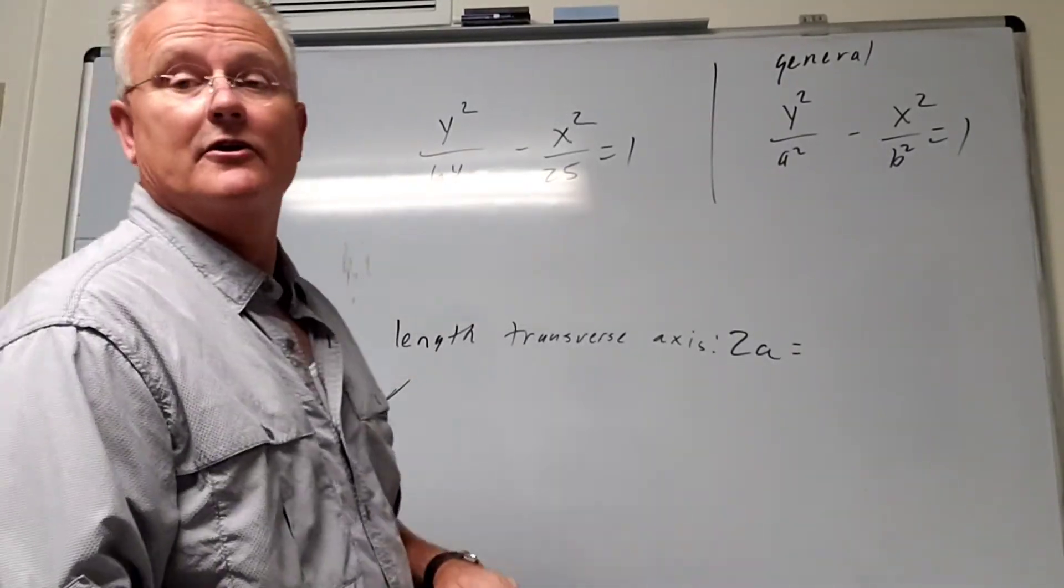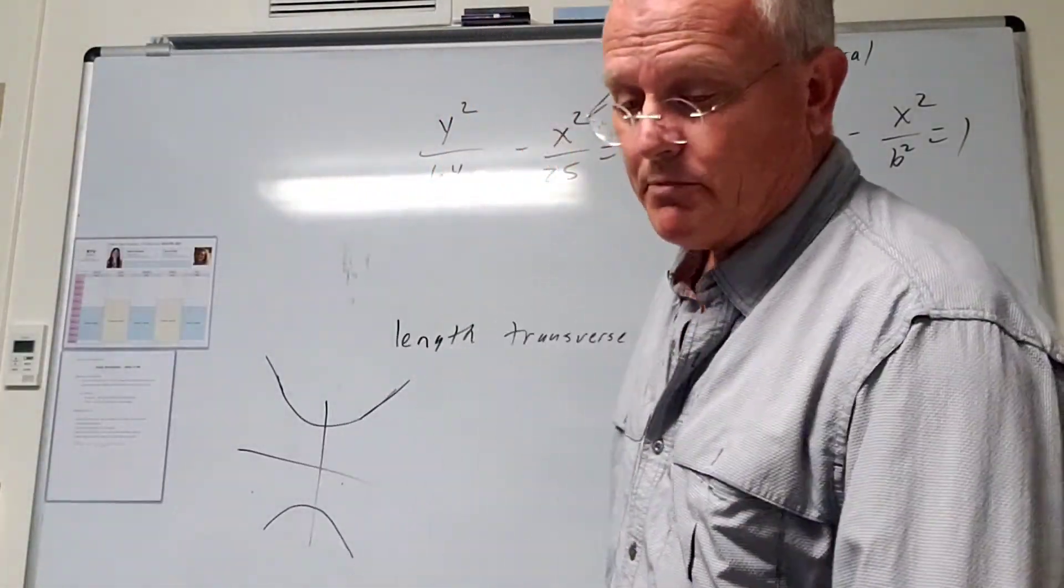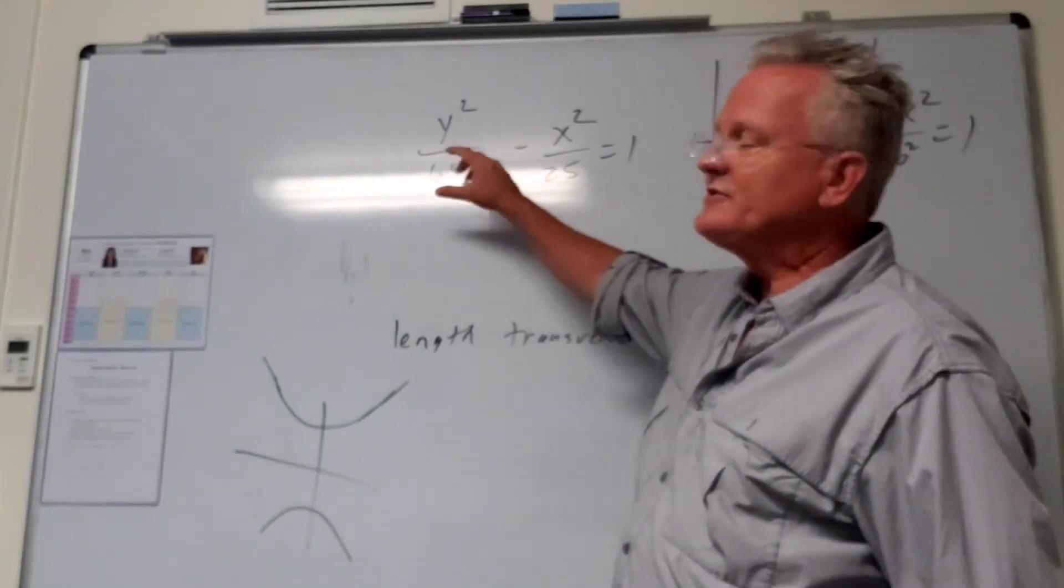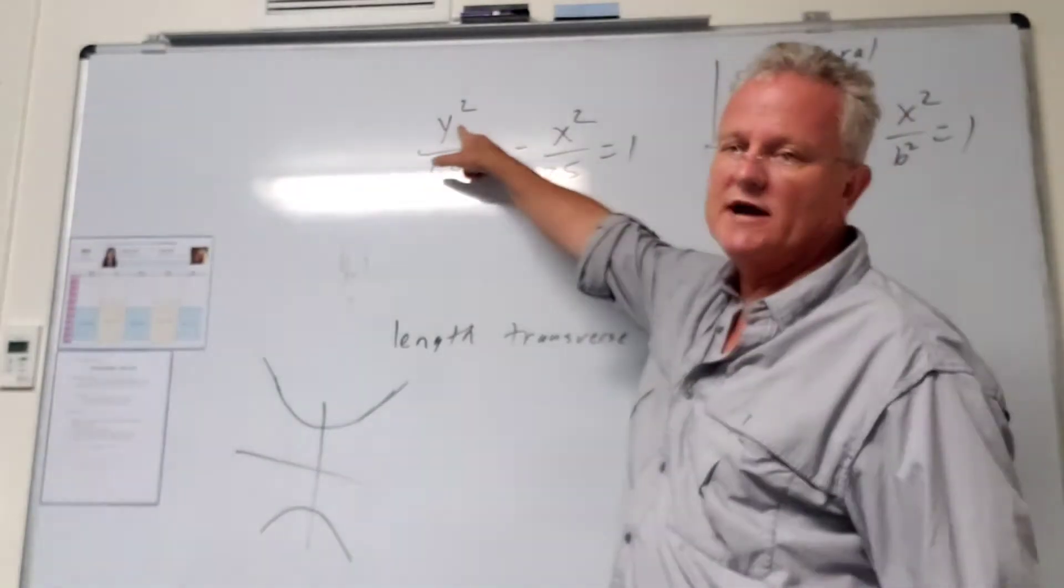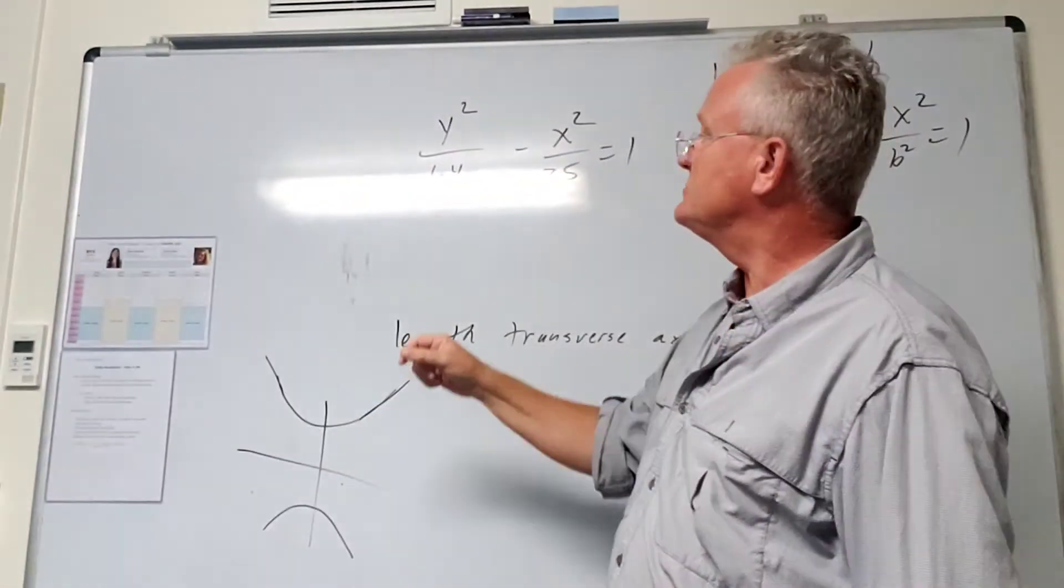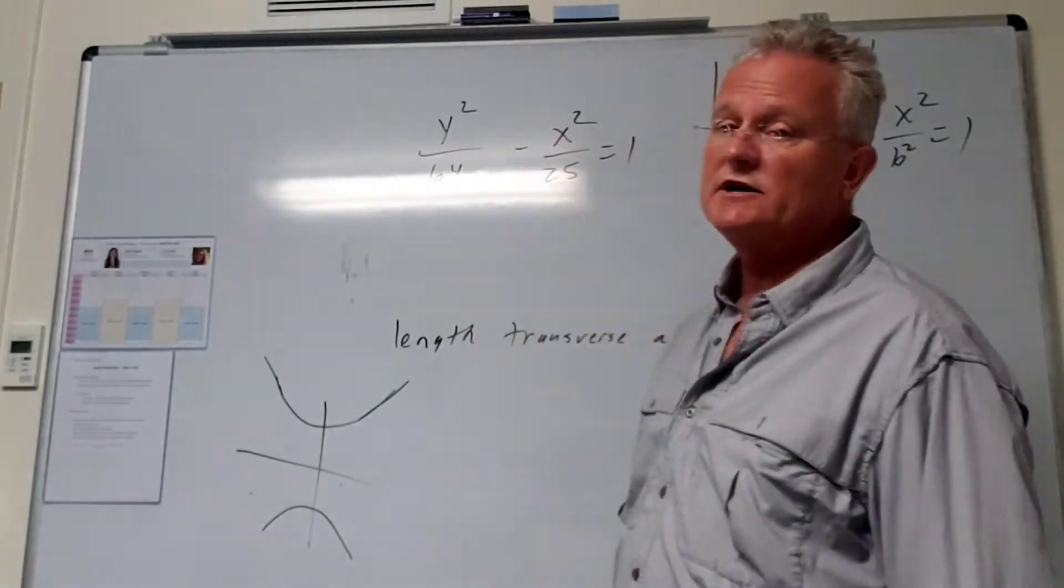Here's our equation for a hyperbola. Notice what matters for hyperbola is: does the x-squared or the y-squared come first? So is it a y-squared minus x-squared type of situation, or an x-squared minus y-squared?